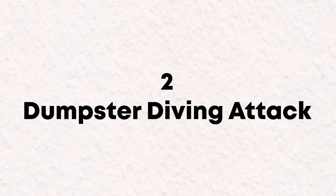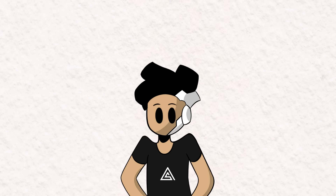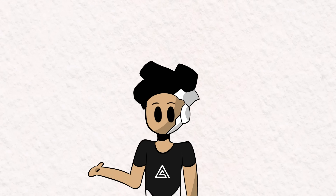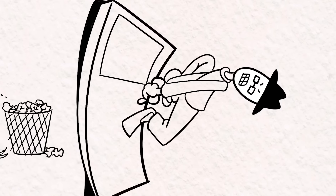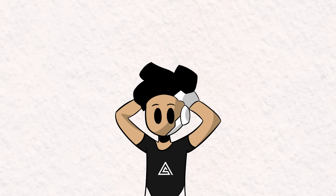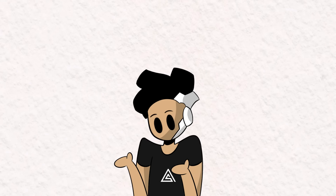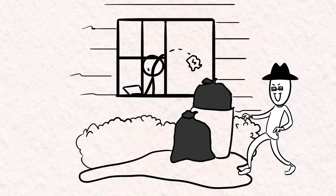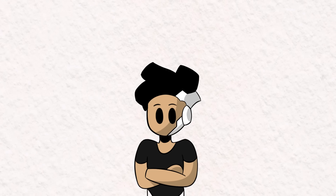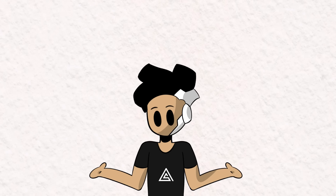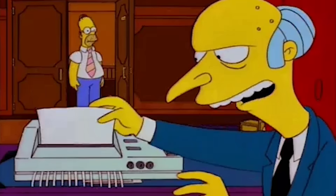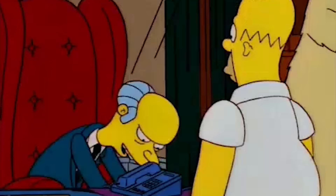Level 2: Dumpster Diving Attack. This is one of the least effective ways to try cracking someone's password because it's limited by physical access and relies on poor physical security practices. You'd have to hope that someone actually wrote down their password and carelessly threw it away. In today's digital age, important credentials are rarely discarded so openly, and many businesses use shredders to dispose of sensitive documents.